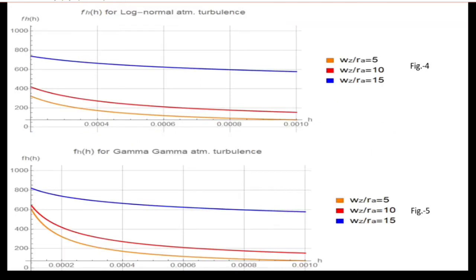Figures 4 and 5 show the channel distribution under both log-normal and gamma-gamma atmospheric turbulence for different values of Wz upon Ra, where Wz is beam width and Ra is aperture radius. From these figures, we observe that the accuracy of the derived analytical channel model depends on the ratio of Wz to Ra. The log-normal model is appropriate for weak turbulence conditions, while gamma-gamma is appropriate for strong turbulence. Since we are dealing with strong turbulence, we use the gamma-gamma distribution.